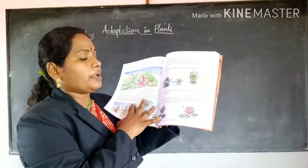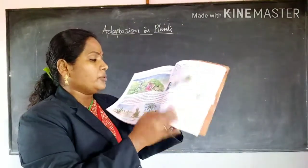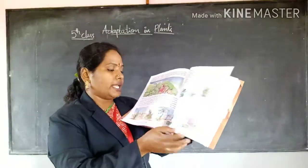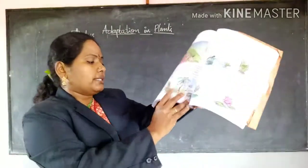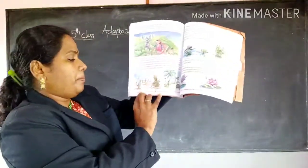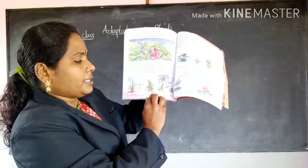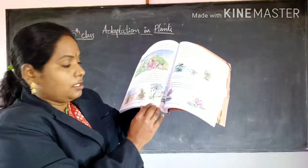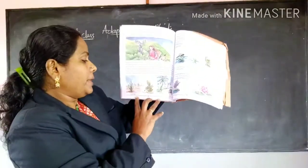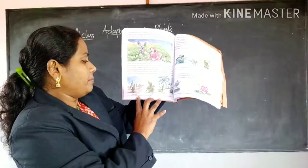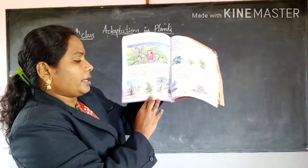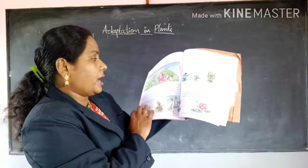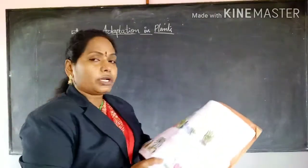Additional examples for plants that grow in desert areas: prickly pear, cactus, date palm, and aloe vera.